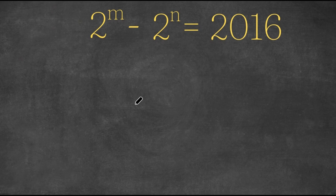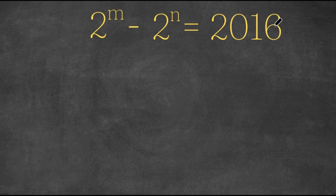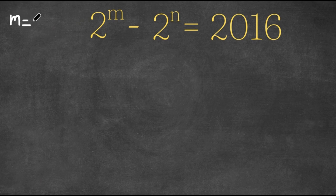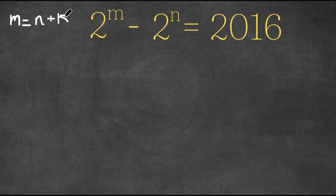Welcome back to Qlik Academics. In today's video, I'm going to be teaching you guys how to solve this exponential equation. So we have 2 to the power of m minus 2 to the power of n equals 2016. What I'm first going to do is set m equal to n plus k, k being a constant.